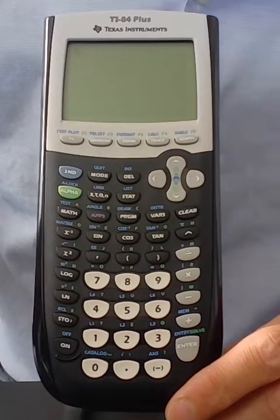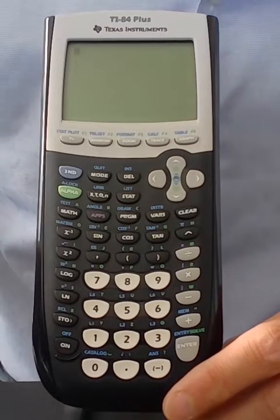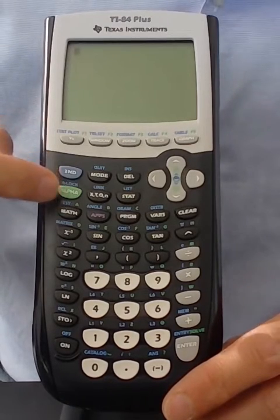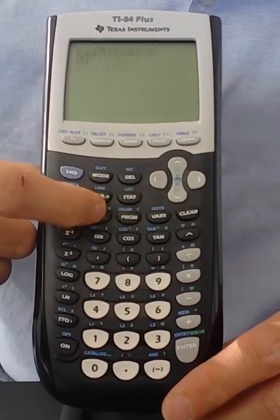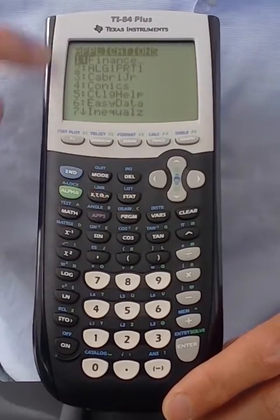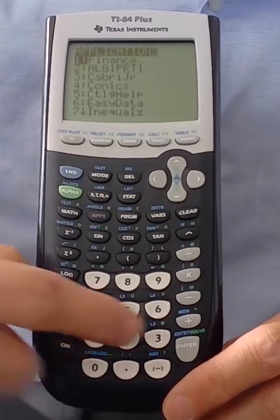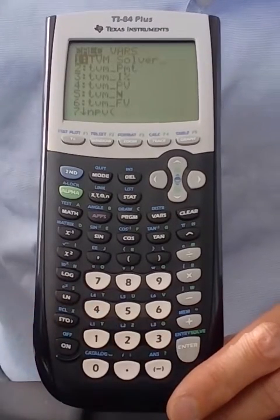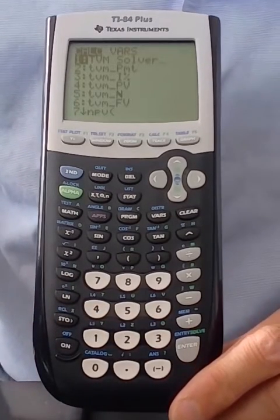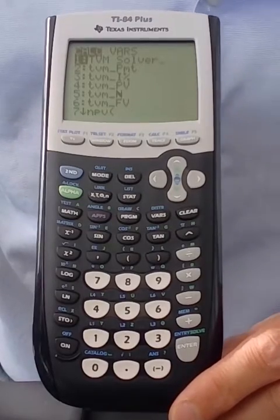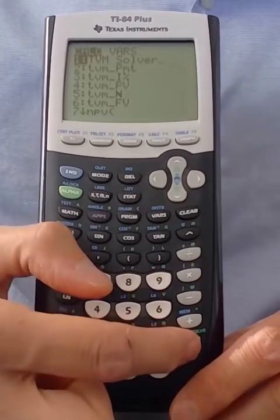To access the TVM solver, we would press the apps button and select finance, the top menu item. So the cursor is already on that, so I'm going to hit enter. And then you will select the very first item on that menu called TVM solver. I'll hit enter.